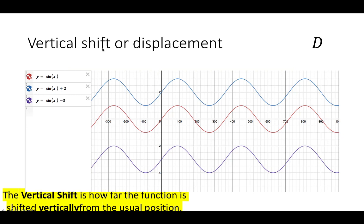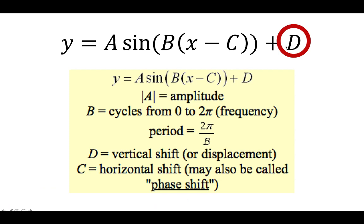Let's begin with a vertical shift. If there's a number added to the sine of x — for example, from sine x (the red graph) we add 2 (the light blue graph) — the graph is still the same waveform, only displaced or moved up 2 units. That is the meaning of the vertical shift: it shows how far the function is shifted vertically from the usual position. In our formula, think of that as the value D.